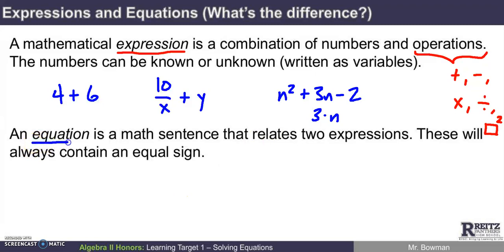Now an equation is a math sentence that relates two expressions. And these will always contain an equal sign. A really easy way to make this happen would be to take two of the expressions that we wrote up above and set them equal to each other. So here's an example of a math equation: 4 + 6 equals 10 divided by X plus Y. In this case, we still don't know what X and Y equal, but we do know that these two quantities are equal to one another.